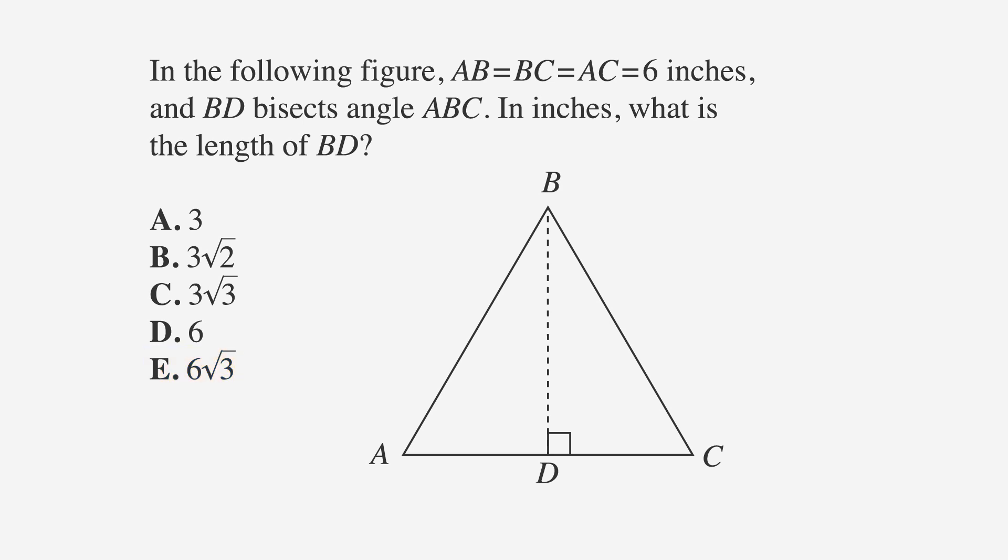To keep track of the information, we'll underline the facts, circle the keywords, and label the answer choices. Let's put the fact that AB equals BC equals AC into the drawing. Let's also put in the fact that all sides are 6.